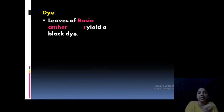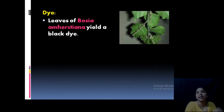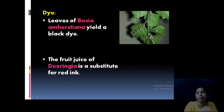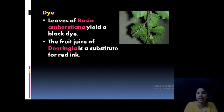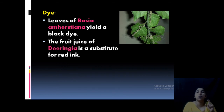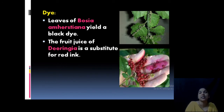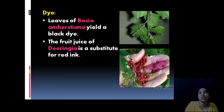For dye production: the plant Boecea yields a black dye, while Deeringia yields a red dye. Both Boecea and Deeringia are applied for the preparation of dyes.